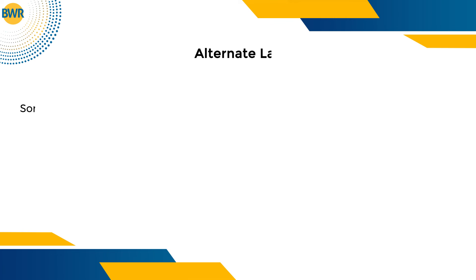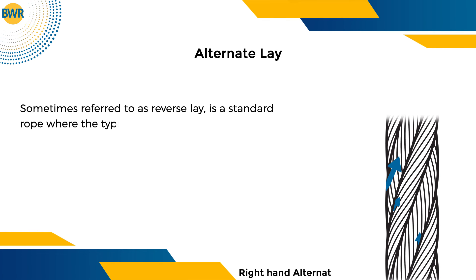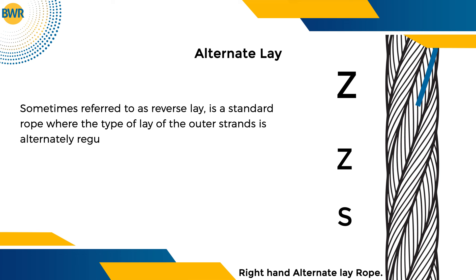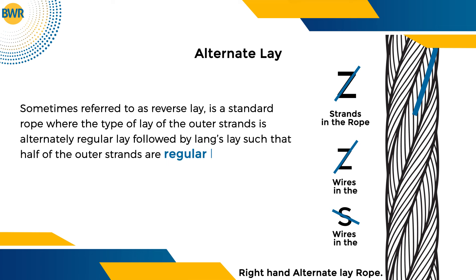Alternate Lay, sometimes referred to as Reverse Lay, is a standard rope where the type of lay of the outer strands is alternately regular lay followed by Lang's Lay, such that half of the outer strands are regular lay and the rest half are Lang's Lay.